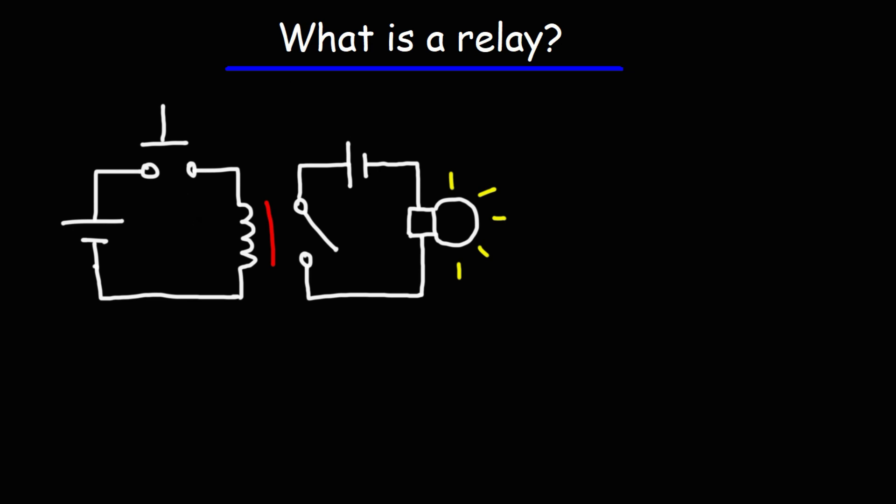So here we have a circuit diagram of a relay and there's two circuits. On the left we have the primary circuit, we'll call this circuit number one, and on the right circuit number two. Circuit number two is controlled by circuit number one.